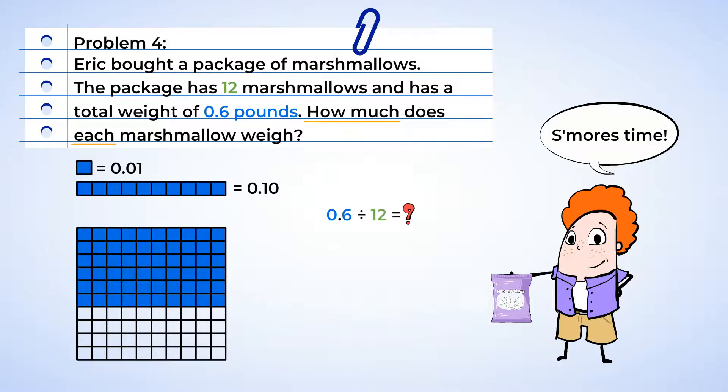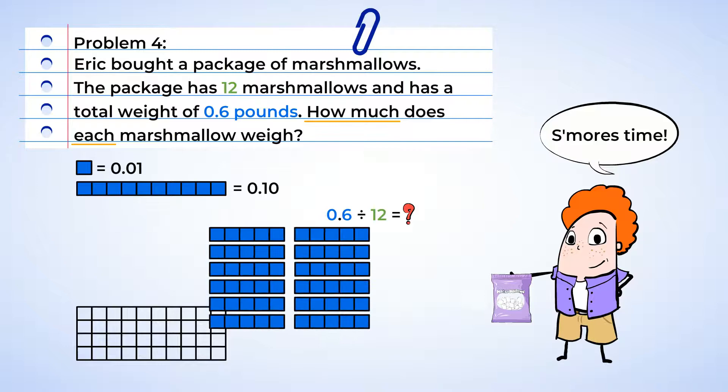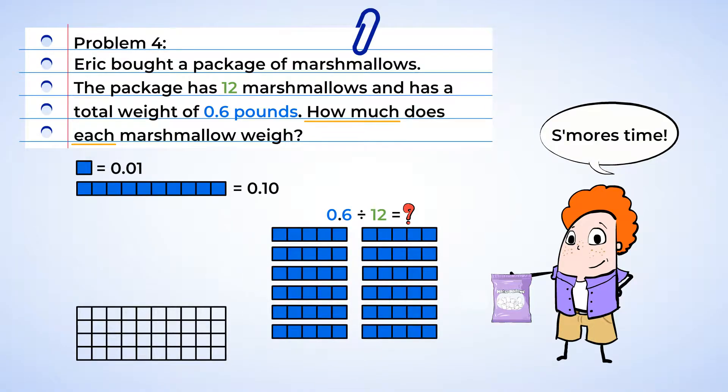When we take sixty-hundredths and we divide into twelve groups, we get five-hundredths in each group. So now we know the answer. Each marshmallow weighs five-hundredths of a pound.